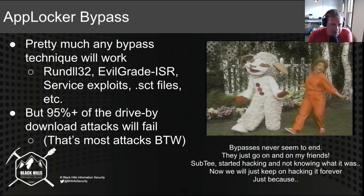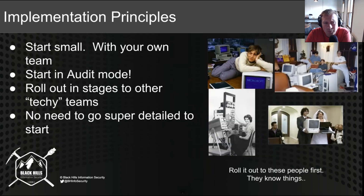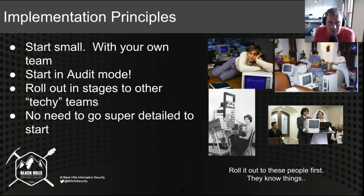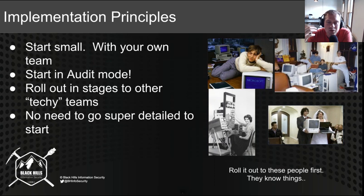Right now, all of your organizations have Sysmon. Right now, all of your organizations have AppLocker — and it's free. We can push it out effectively and it'll make an attacker's life that much more difficult. Some implementation principles: start small. Start with your own security team. You can also start in audit mode — you aren't actually locking things down completely, just auditing to see what it would have blocked during a normal day. Then create AppLocker rules for different publishers and code signing certificates to allow them to run. Roll it out in stages: security team first, then systems administrators or help desk, then the rest of the technical teams, maybe even developers.